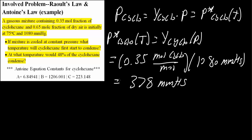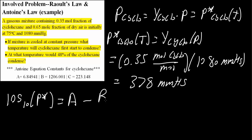We will use this value for the first part: at what temperature will cyclohexane first start to condense? This is where we use Antoine's equation. Antoine's equation is: log base 10 of P* equals A minus B divided by (T plus C), where A, B, and C are Antoine constants given for cyclohexane.